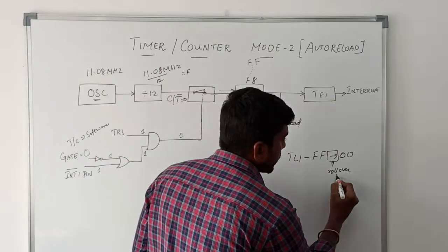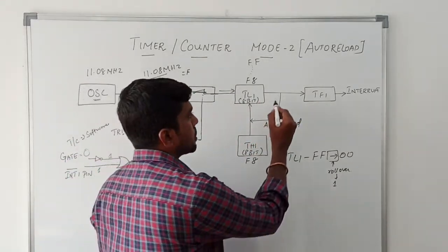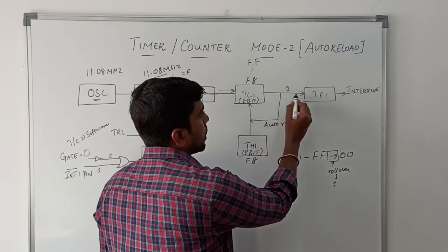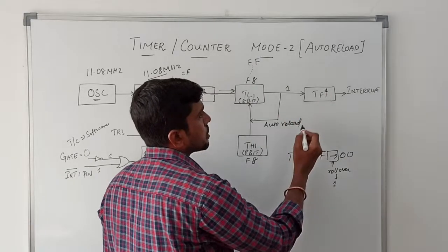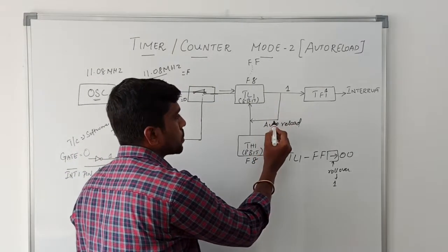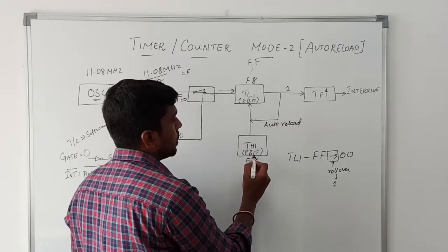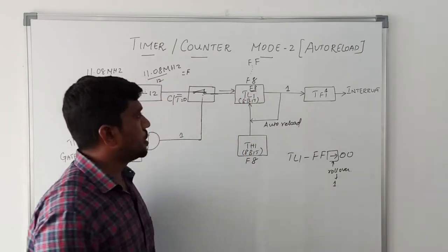This 1 is forced to the TF1 register. This time the flag register is set to 1. This value is forced to TH1. Again, this F8 value is transferred to TL1 register.